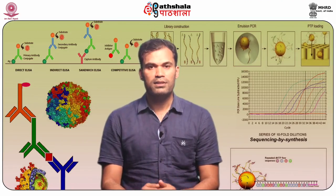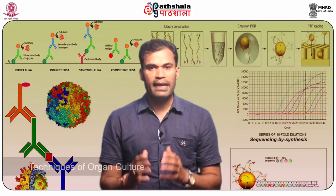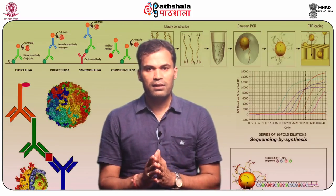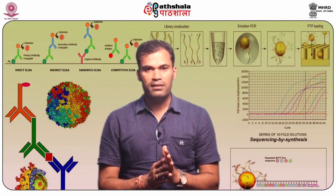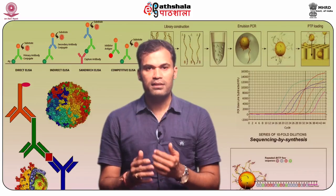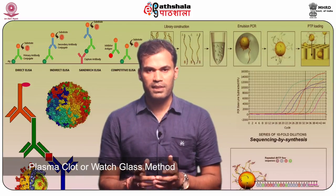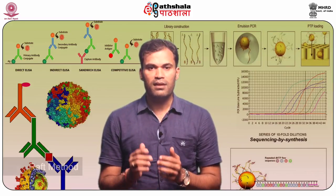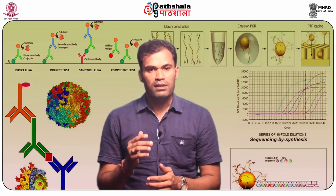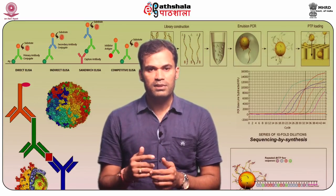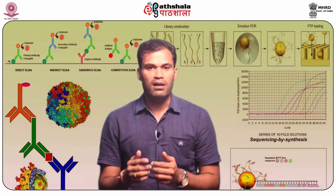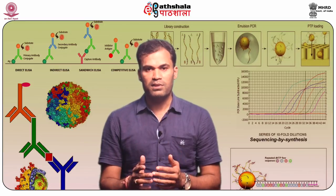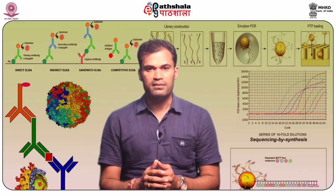Techniques for organ culture. There are various techniques. The first is the plasma clot or watch glass method. The second is the raft method. This can be done using agar gel, the grid method, and cyclic exposure to medium and gas phase.